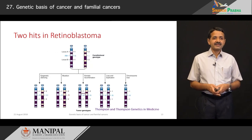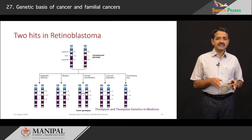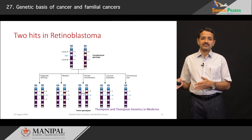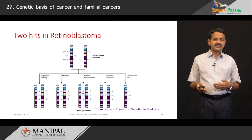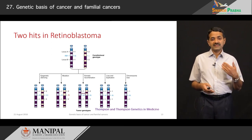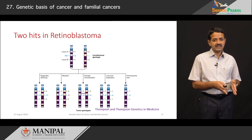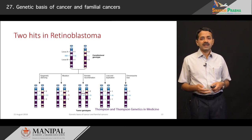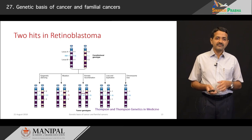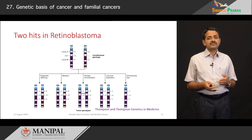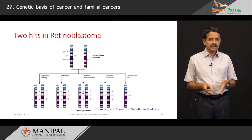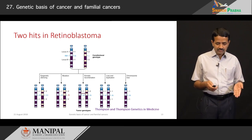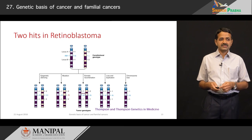This slide illustrates two hits in retinoblastoma. The RB1 gene has one RB mutation and the other allele is normal. The second hit can be epigenetic silencing of the second allele, a mutation in the second allele, somatic recombination with loss and duplication, or chromosome loss — something called loss of heterozygosity — where both alleles appear to have mutation. This is how the two-hit hypothesis is explained in retinoblastoma.